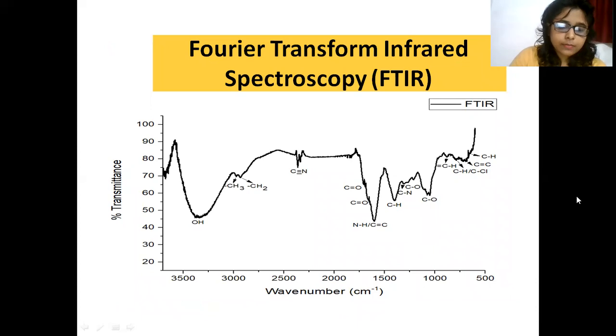FTIR results help me to know the surface chemistry of my prepared carbon dots. In this graph, we can see hydroxyl group, alkene, nitrile, carbonyl group, and amine group. In amine group, there's a sharp peak and phenyl group is also present.